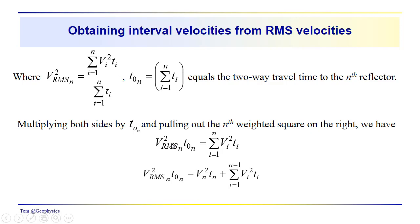We multiply both sides by t_0n. We get VRMS squared t_0n equals this sum. And we're going to pull out a V_n squared t_n out of this sum, which is going to leave us with a sum from i equals 1 to n minus 1. So we've just taken out one of the terms.